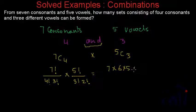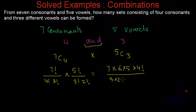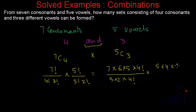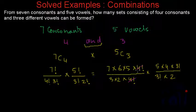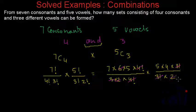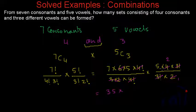This expands to 7 × 6 × 5 × 4 factorial divided by 3 factorial times 3 factorial, multiplied by 5 factorial over 3 factorial times 2. The 4 factorials cancel, the 6 cancels with part of 3 factorial, and 3 factorial cancels with 3 factorial. This gives us 7 × 5 = 35, multiplied by 10, giving a total of 350.